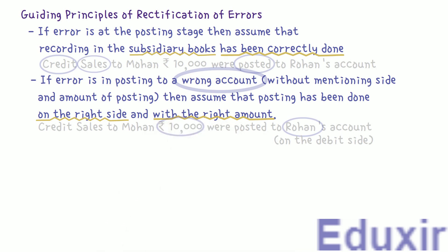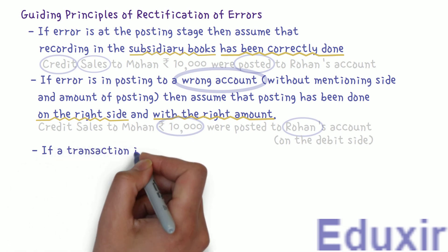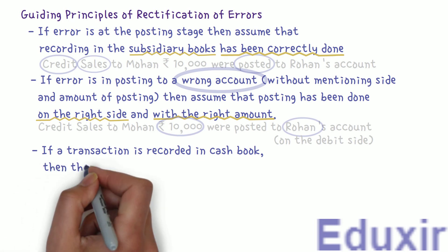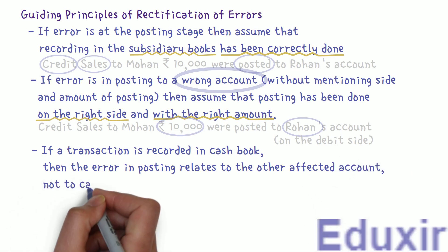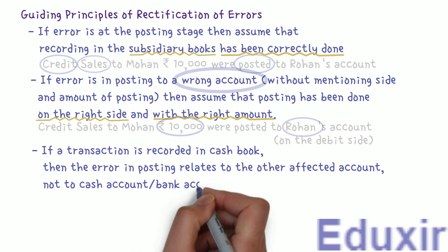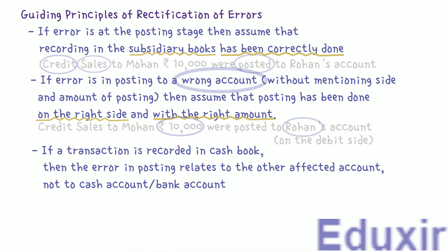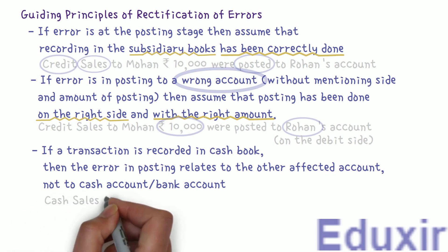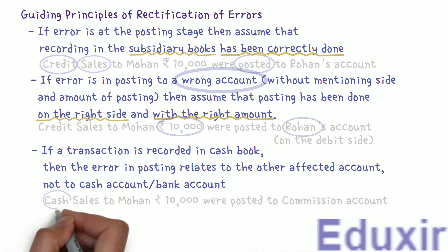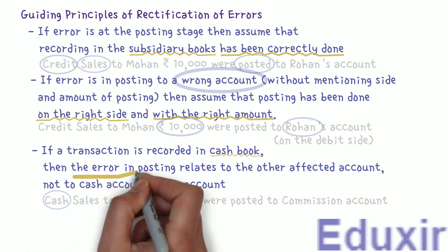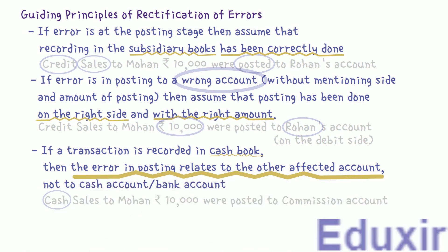One more guiding principle to consider is that if a transaction is recorded in the cash book, then the error in posting relates to the other affected account, not to cash account or bank account. Let us understand this by taking one example wherein the error is stated as: cash sales to Mohan, Rs. 10,000 were posted to commission account. As this is a cash sale, it should be recorded in the cash book, so we assume that the cash account is recorded correctly. This error is related to the other affected account — the sales account and the commission account. With this information, let us now proceed with the analysis of each of the errors in the given problem.